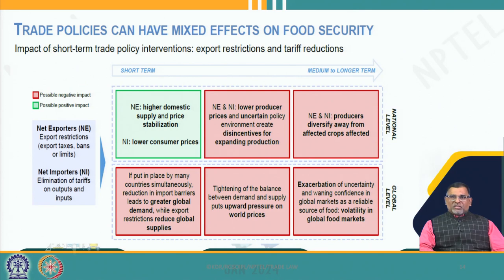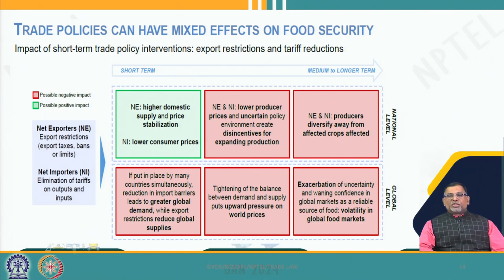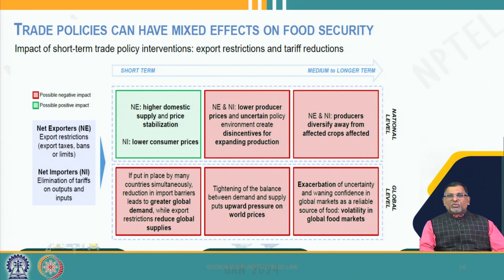The government of India banned exports for a period of time to ensure sufficient domestic supply and price stabilization — otherwise food prices would go up as happened in developed countries very recently. If availability is less and demand is more, there will be upward pressure on world prices. Conflicts in various parts of the world lead to uncertainty and loss of confidence in global markets.